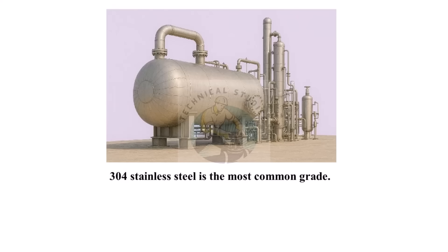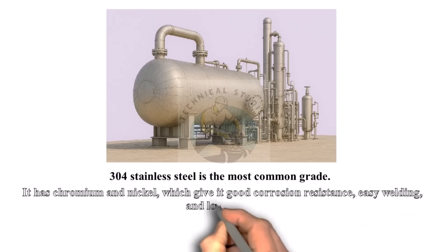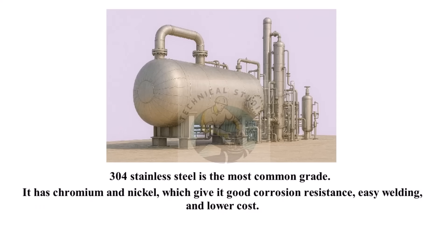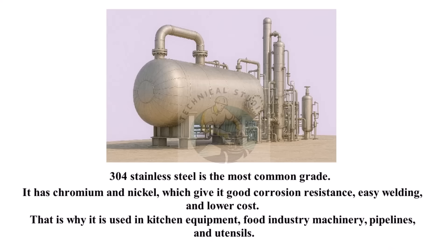304 stainless steel is the most common grade. It has chromium and nickel, which give it good corrosion resistance, easy welding, and lower cost. That is why it is used in kitchen equipment, food industry machinery, pipelines, and utensils.